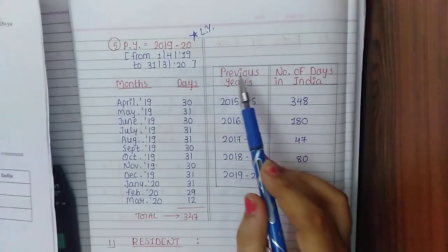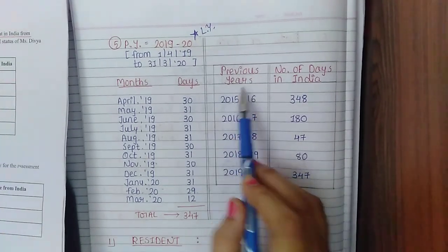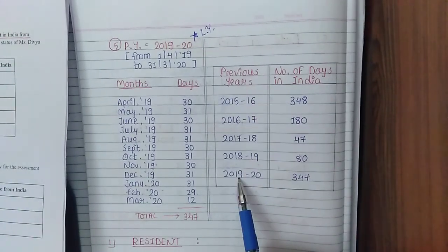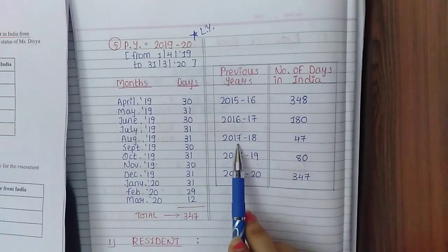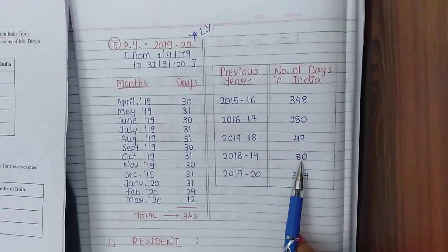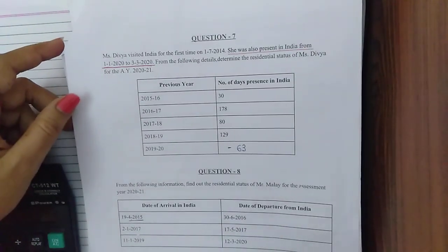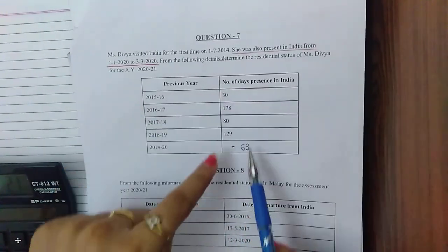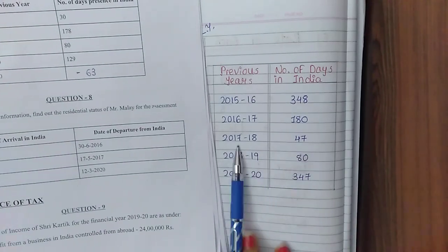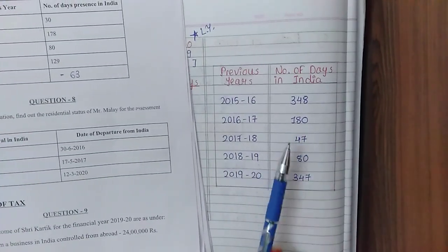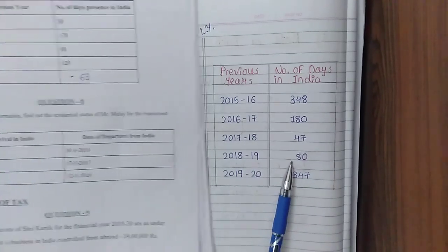Now prepare a summary table of previous years and number of days present in India: 2015-16: 348 days; 2016-17: 180 days; 2017-18: 47 days; 2018-19: 80 days; 2019-20: 347 days. In earlier questions, this table was given directly. In this question, we had to calculate it ourselves first, then apply the conditions.